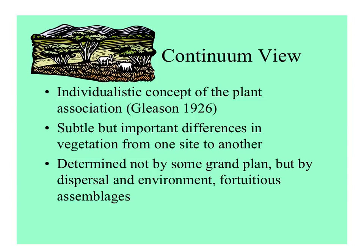Another view of plant ecology was first described by Gleason and later elaborated by Gleason and Cronquist, who wrote a book about the individualistic concept of the plant association. This is a sort of continuum view — there are slight differences between one site and another, determined by dispersal, the environment, and the experience of each individual species. So every community is a fortuitous combination of things that ended up there, and plants live wherever they can disperse to and are tolerated.